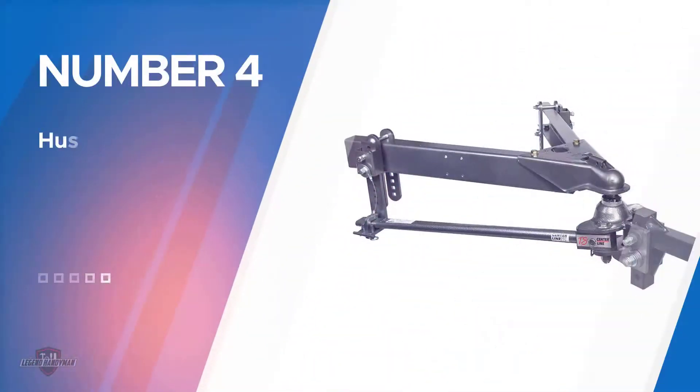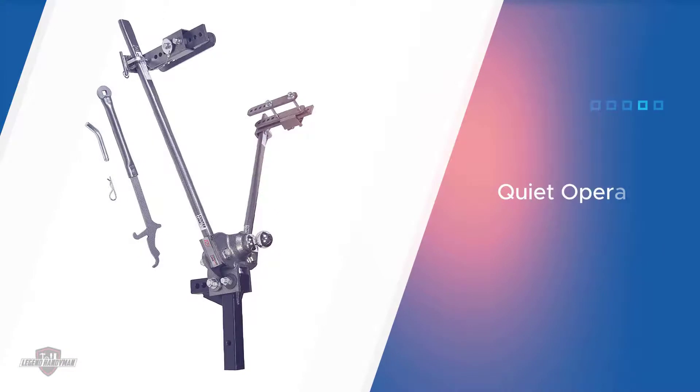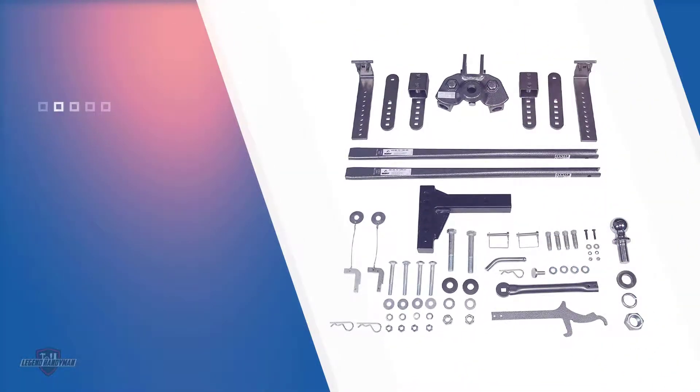Number four: Husky 32218 center line TS with spring bars. If you're looking for a trunnion style hitch that doesn't cause a bunch of extra noise while you're driving down the highway, check out the Husky 32218 center line TS. Annoying noise can be an issue with other sway bars and weight distribution products, but that's not the case with this hitch.